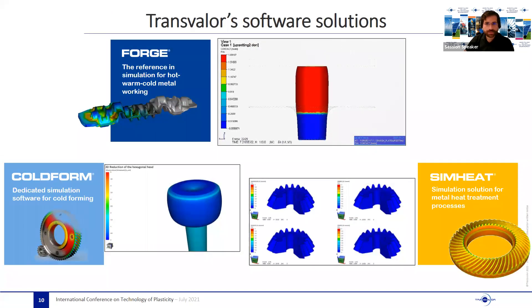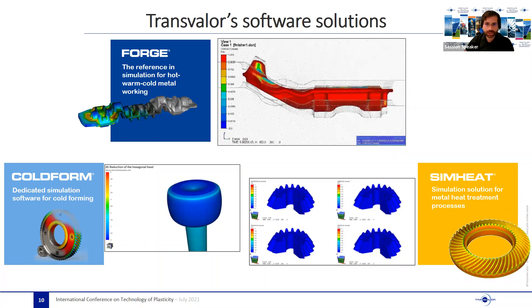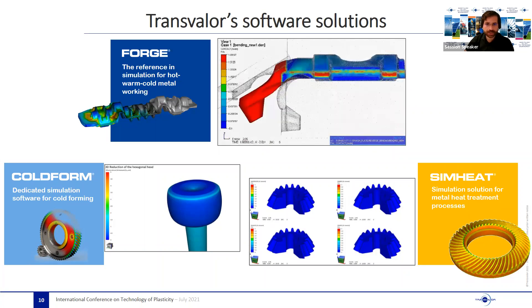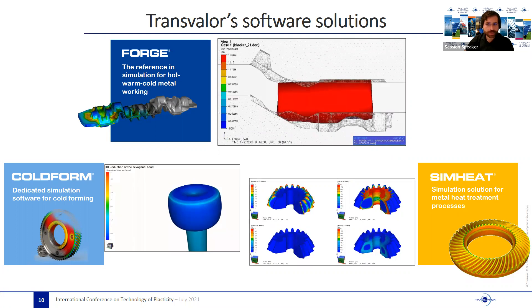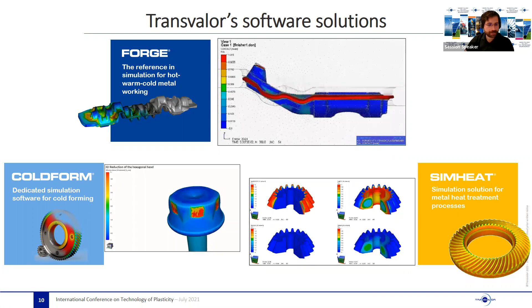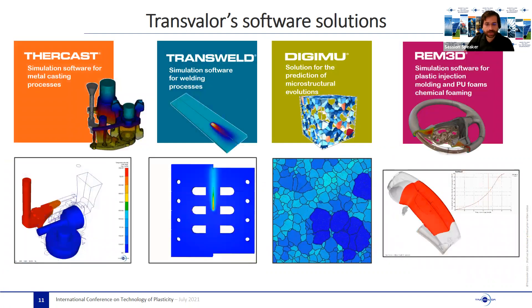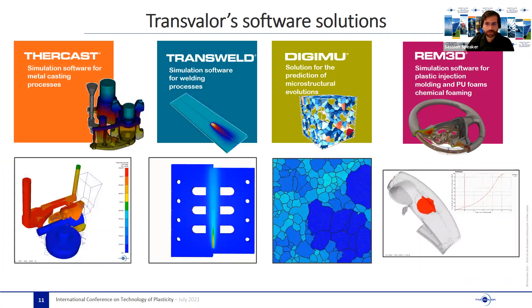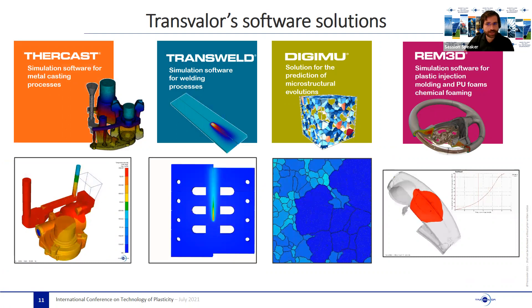Today we have an offer of seven simulation software, among which the most well-known is Forge, dedicated to forming of solid-state matter and its two brothers, Coldform and SimHeat, which are dedicated to cold-forming applications in the first case and heat treatments for the second case. Then we have Thercast for CFD and fluid structure mechanics, dedicated to casting and foundry applications.